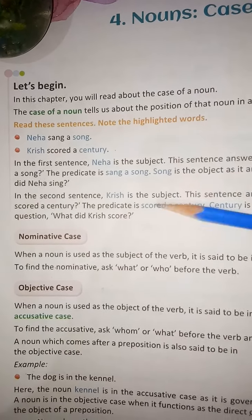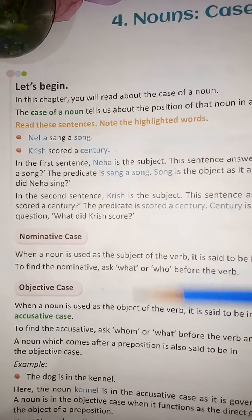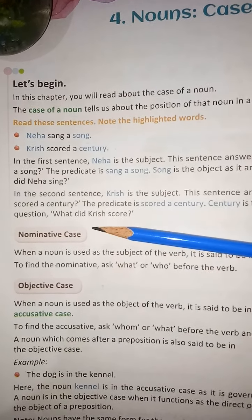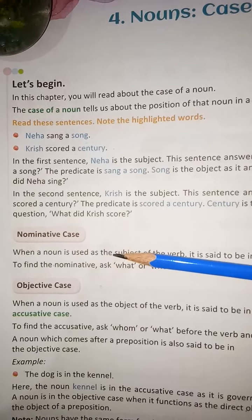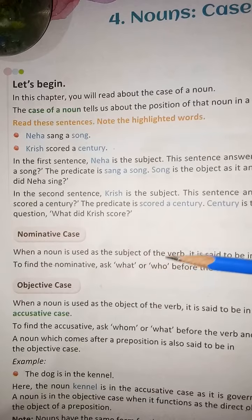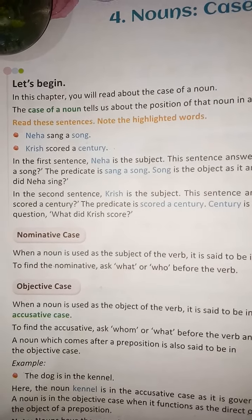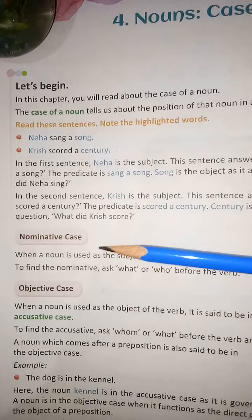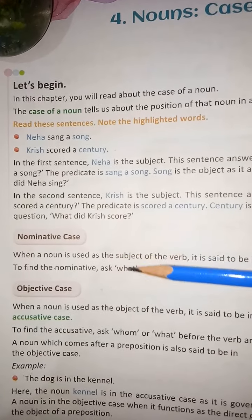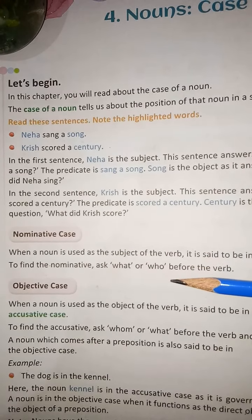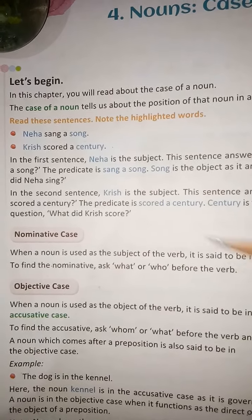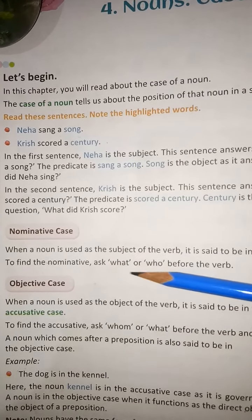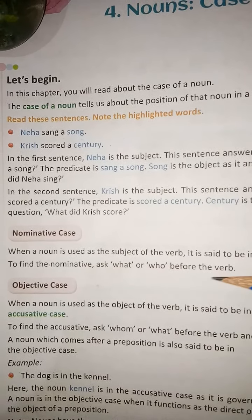We have three types of cases. First is the nominative case — when a noun is used as the subject of a verb, it is said to be in the nominative case. To find the nominative, ask 'who' or 'what' before the verb.